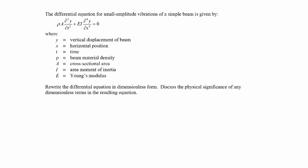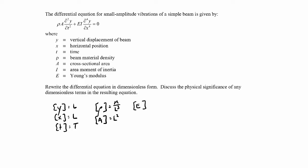Let's write down what the dimensions are for each of these quantities. The dimensions of y will be length, dimensions of x will be length, dimensions of time will be time, and the dimensions of rho — the density of the material — will be mass over length cubed. Dimensions of A, the cross-sectional area of the beam, will be length squared. Dimensions of E, the elastic modulus or Young's modulus, is like a force per length squared.